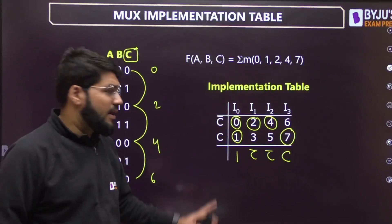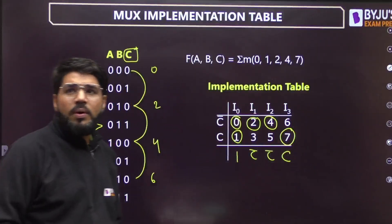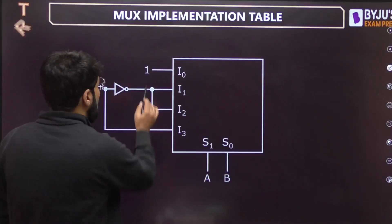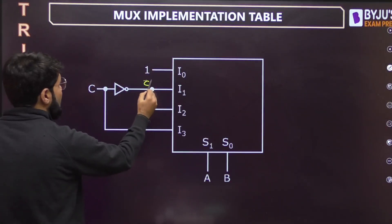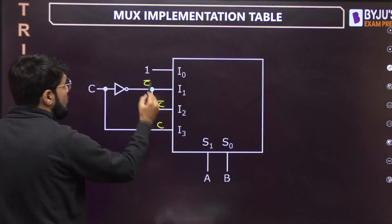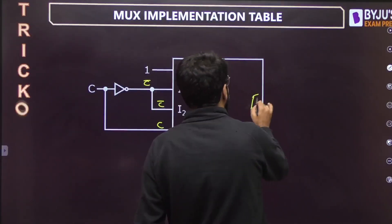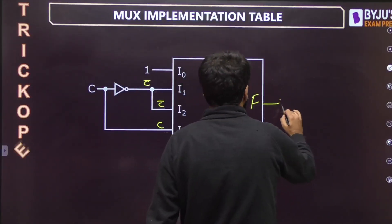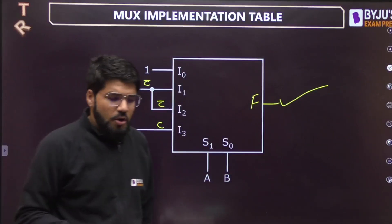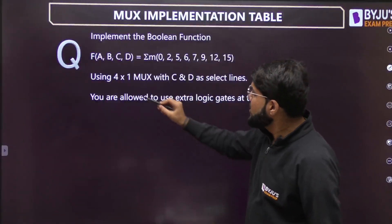Both circles → 1; only top (C-bar) → C-bar; only top → C-bar; only bottom (C) → C. So the inputs to the multiplexer should be: 1, C-bar, C-bar, C. Have a look at the answer: 1 goes to I0, C-bar to I1, C-bar to I2, C to I3. This particular multiplexer will implement the given Boolean function.